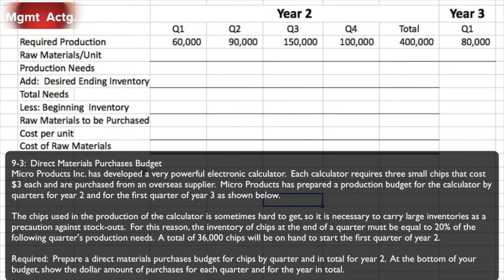The chip used in production of the calculator is sometimes hard to get, so it is necessary to carry large inventories as a precaution against stockouts. For this reason, the inventory of chips at the end of a quarter must equal 20% of the following quarter's production needs. A total of 36,000 chips will be on hand to start the first quarter of year two. We need to prepare a direct materials purchases budget for chips by quarter and in total for year two.